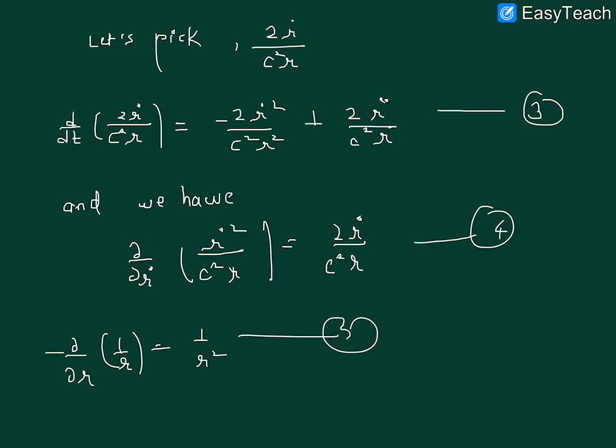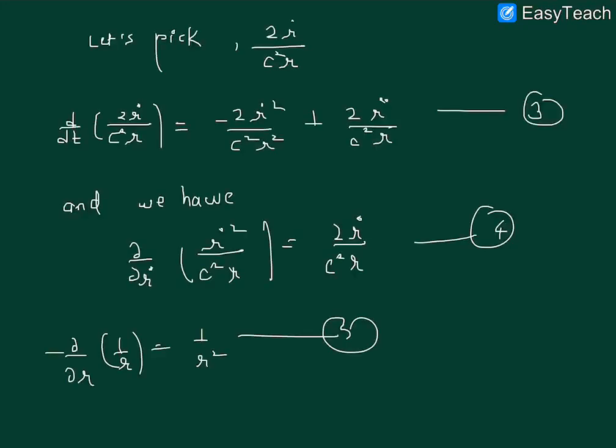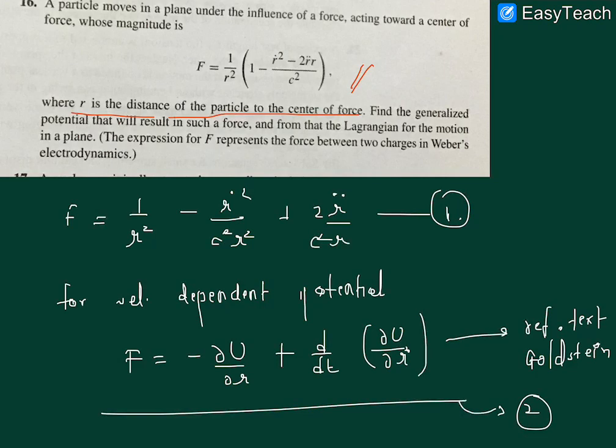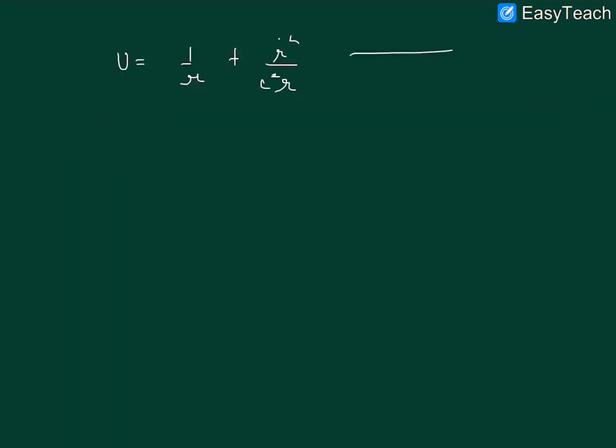Just in a way that I get my U as one by r plus r dot square upon c square r. So if you go on to put my U, which is given by equation 6, let me also highlight this equation.